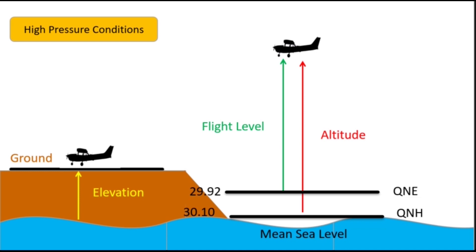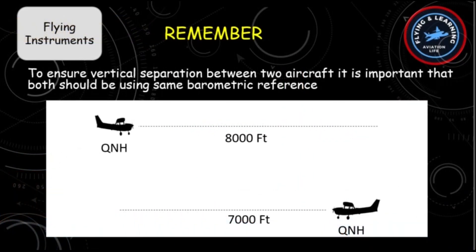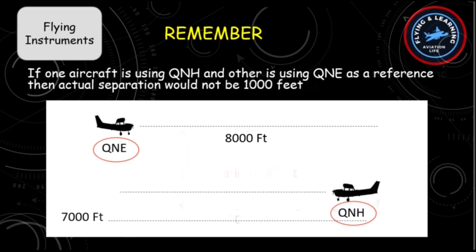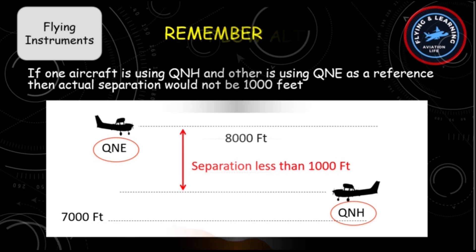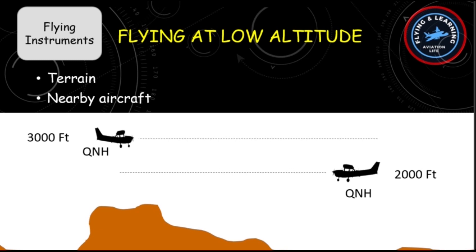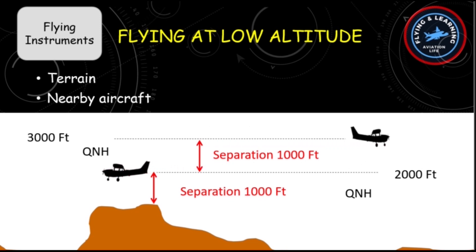To ensure vertical separation between two aircraft, it is important that both use the same barometric reference — either QNH or QNE. For example, if a higher aircraft is maintaining 8,000 feet on QNE and the lower one is maintaining 7,000 feet on QNH, and outside pressure conditions are high, the aircraft using QNH will actually be flying higher than 7,000 feet, making the separation less than 1,000 feet — a collision hazard. Therefore, at low altitude, all aircraft must maintain local QNH settings to ensure vertical separation from terrain and nearby aircraft.